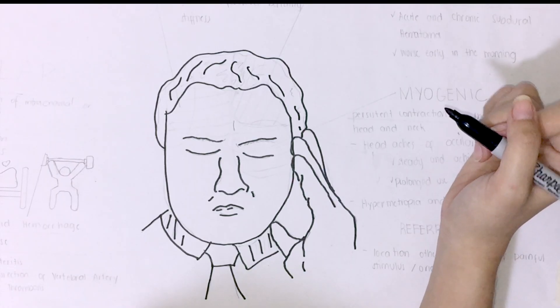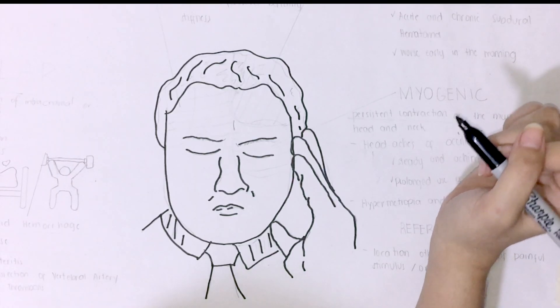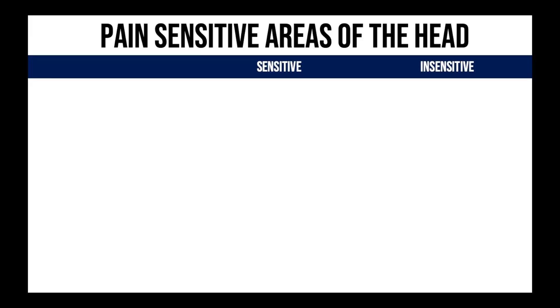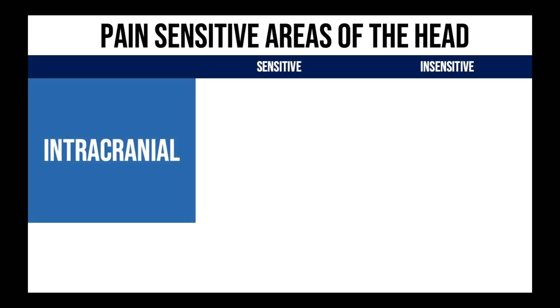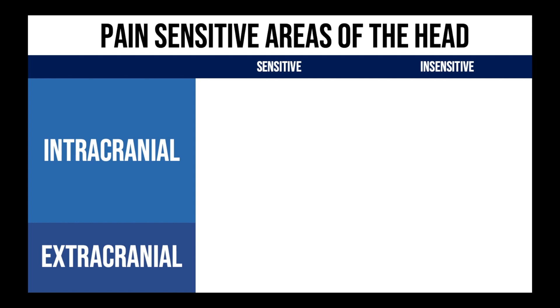With that, which of those structures are likely sensitive to pain? Pain-sensitive areas can be divided into intracranial or extracranial.